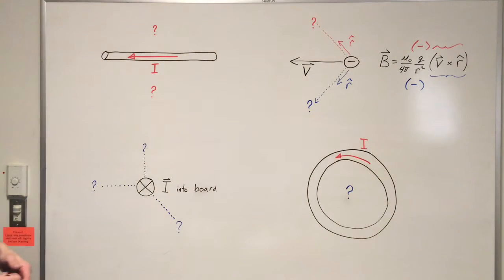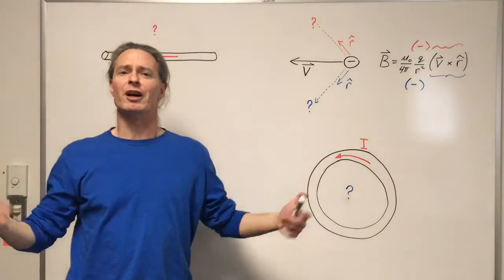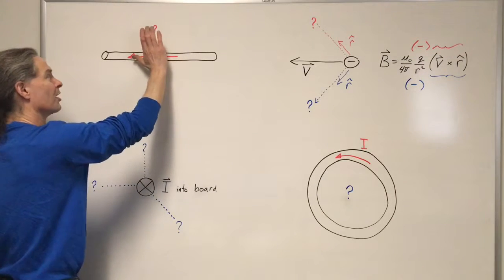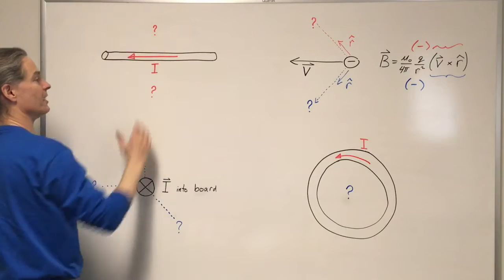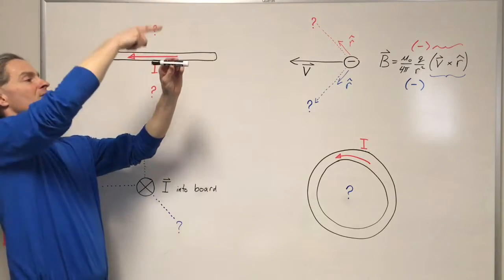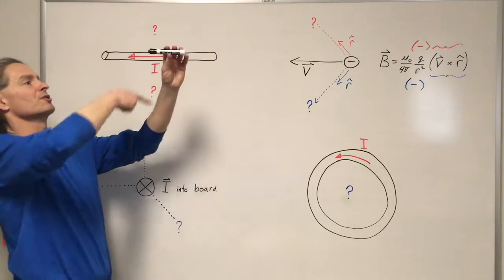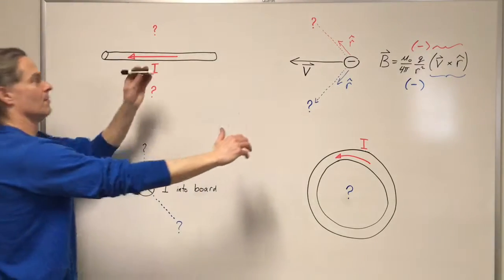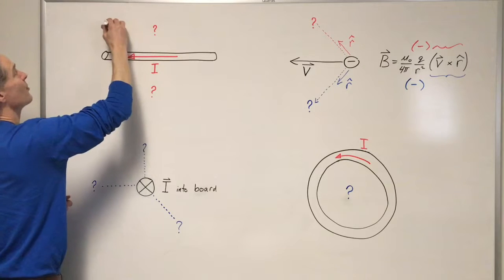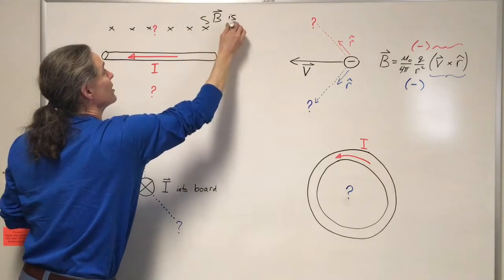Alright, let's go over these problems. I've got a current flowing to the left. The derived right-hand rule we use for finding the direction of the magnetic field produced by a current segment is to stick the thumb of your right hand in the direction of the current — the fingers wrap around in the direction of the magnetic field. The magnetic field lines basically make circles around the current. The purpose of this derived right-hand rule is just to determine whether we follow the circles this way or that way. Thumb in the direction of the current, fingers are into the board up here. So up here, the magnetic field is in — I'm going to use little x's to represent 'in' for the direction of the magnetic field. B is in up here.